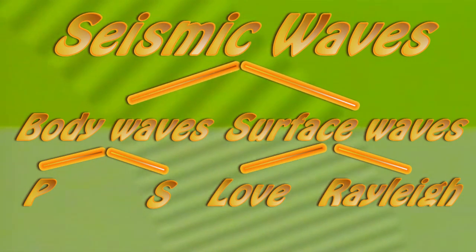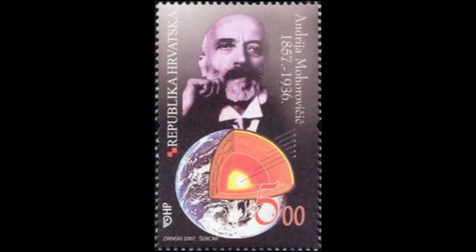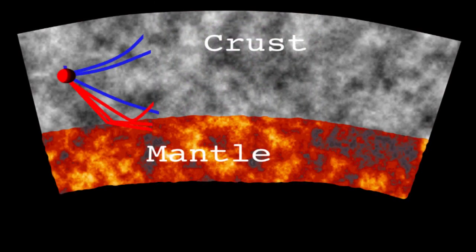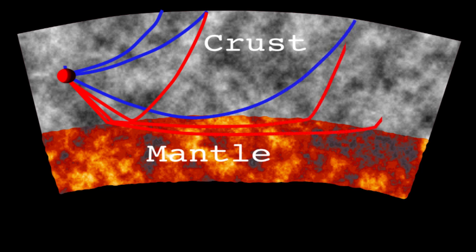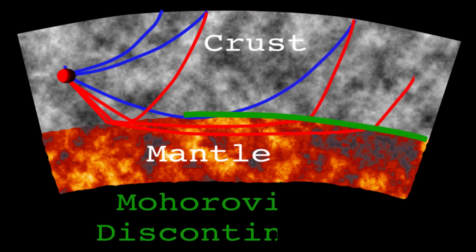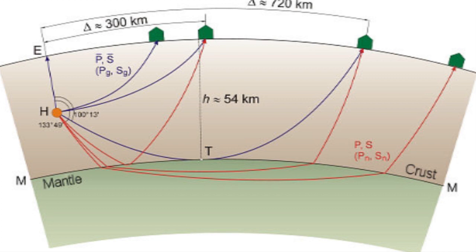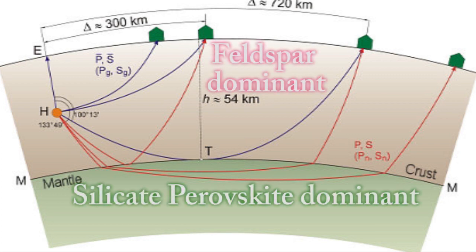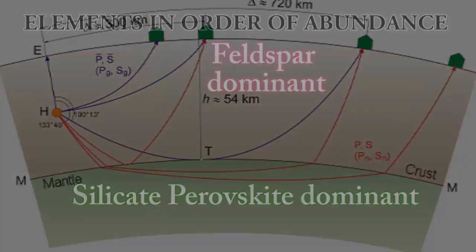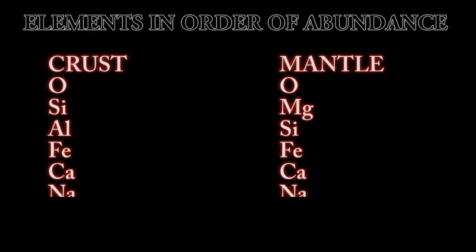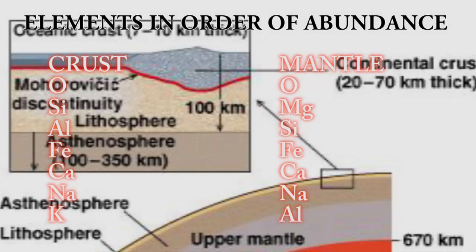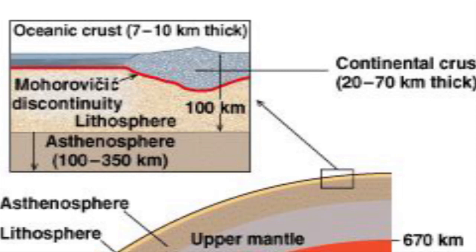In 1909, Croatian seismologist Andrija Mohorovičić noticed that seismic waves arrived in a pattern that only made sense if the P and S waves were bouncing off some kind of boundary within the Earth. This boundary is called the Mohorovičić discontinuity, or the MOHO, and it marks the base of the Earth's crust — a compositional boundary where aluminum-silica-rich minerals decline and give way to more iron-magnesium-rich varieties with depth. The base of the crust is about 7 to 10 kilometers below ocean floors, or 30 to 70 kilometers below continental surfaces.